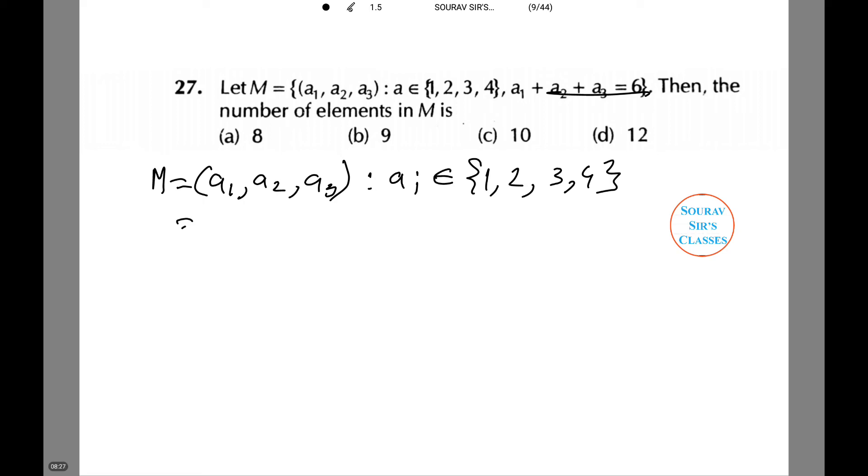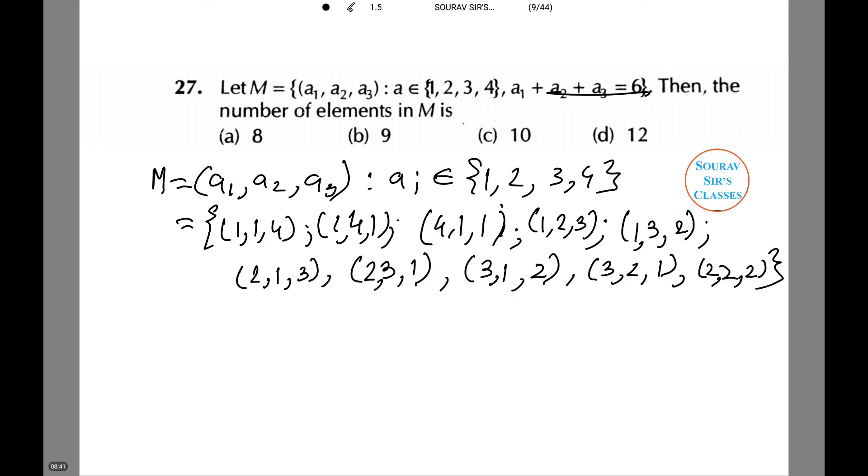Hence this equals (1,1,4), (1,4,1), (4,1,1), and so on. I'll do it quickly so you can see it all in one go. These are the elements, hence the number of elements in M equals 10. Hence option C is the correct option.